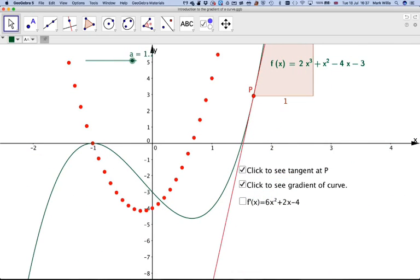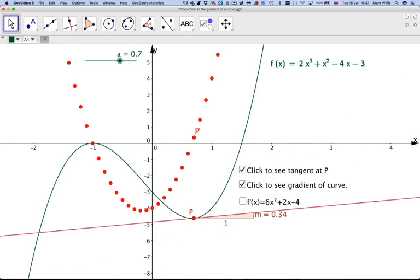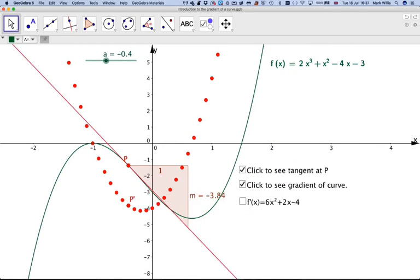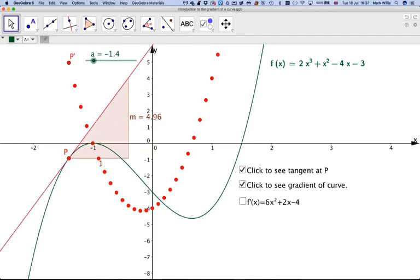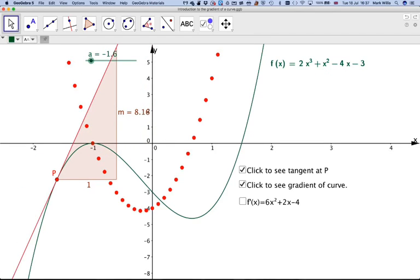But the thing is, it changes. And we're going to look at this in a lot more detail now. But all I want you to have is what is the geometrical meaning of finding the gradient of a curve. That's finding the gradient of the tangent at a particular point.